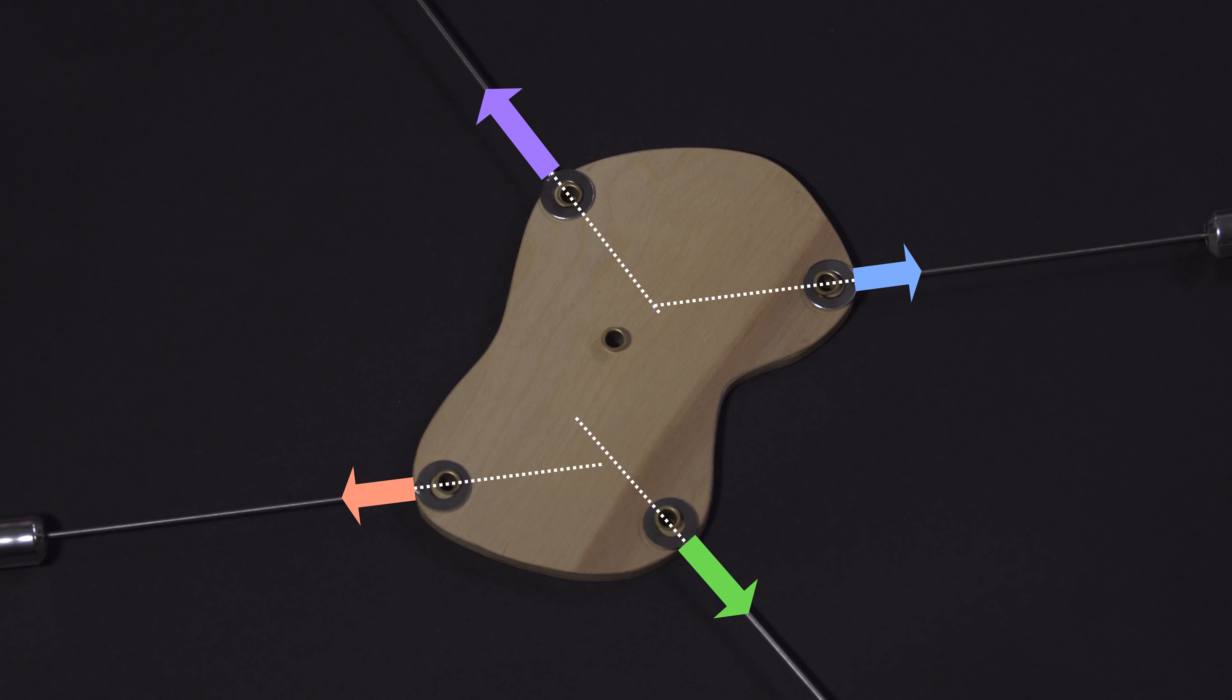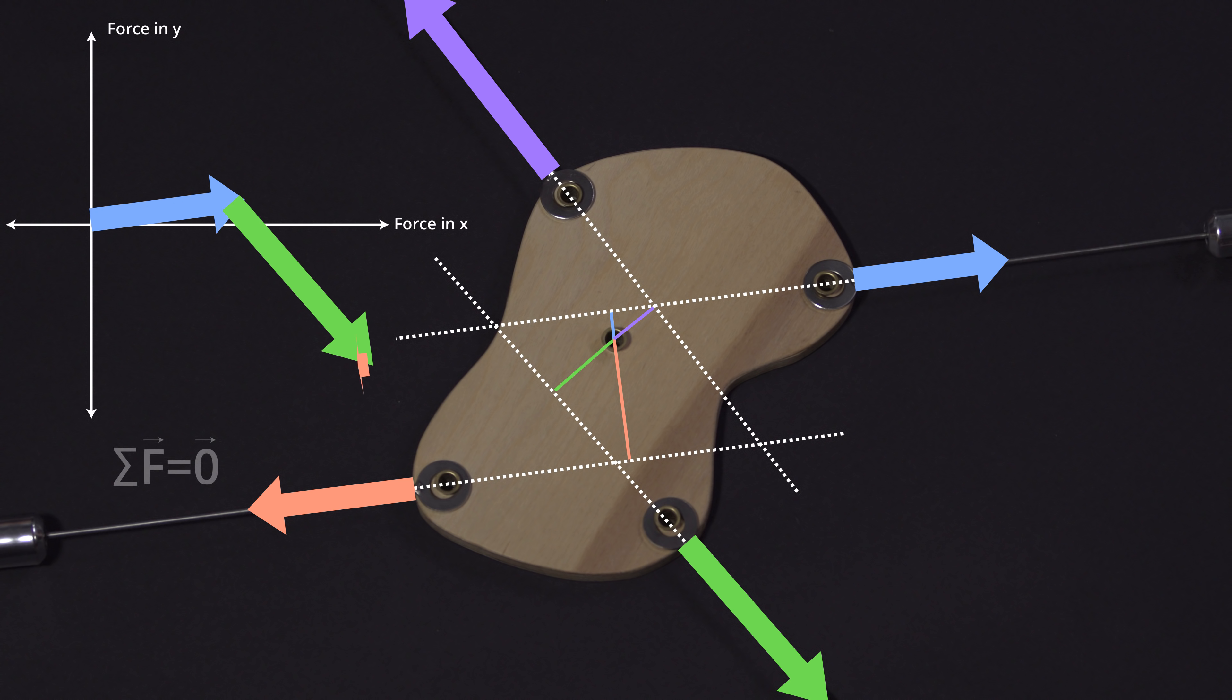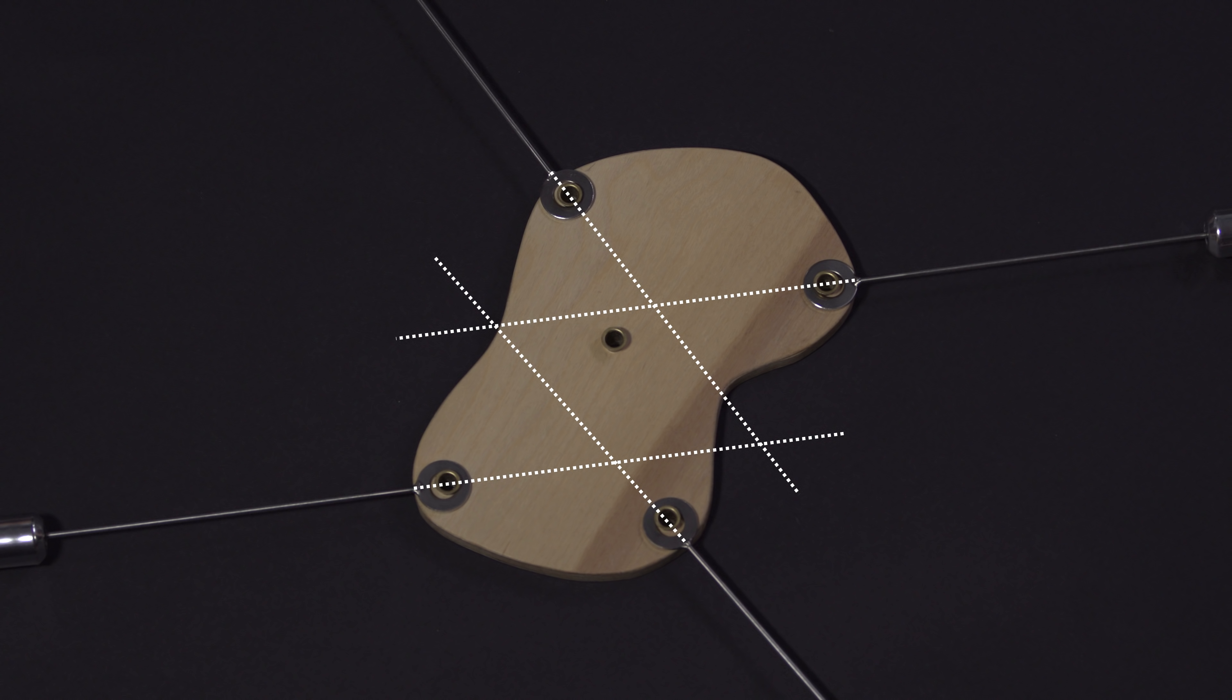For a rigid body that carries more than three forces to be in equilibrium, the vector sum of those forces must add to zero, and the sum of the moments must also be zero. But, as this example demonstrates, the lines of action of the forces may not intersect at a common point. And so we see that the principle of concurrent forces does not apply to bodies with more than three forces.